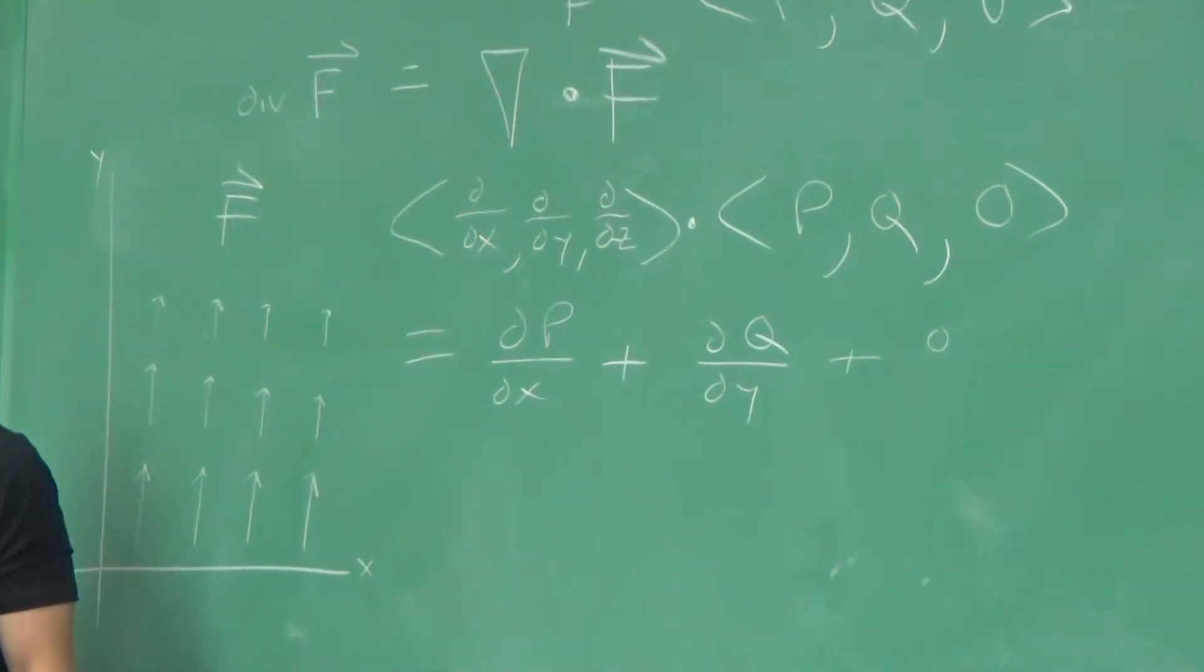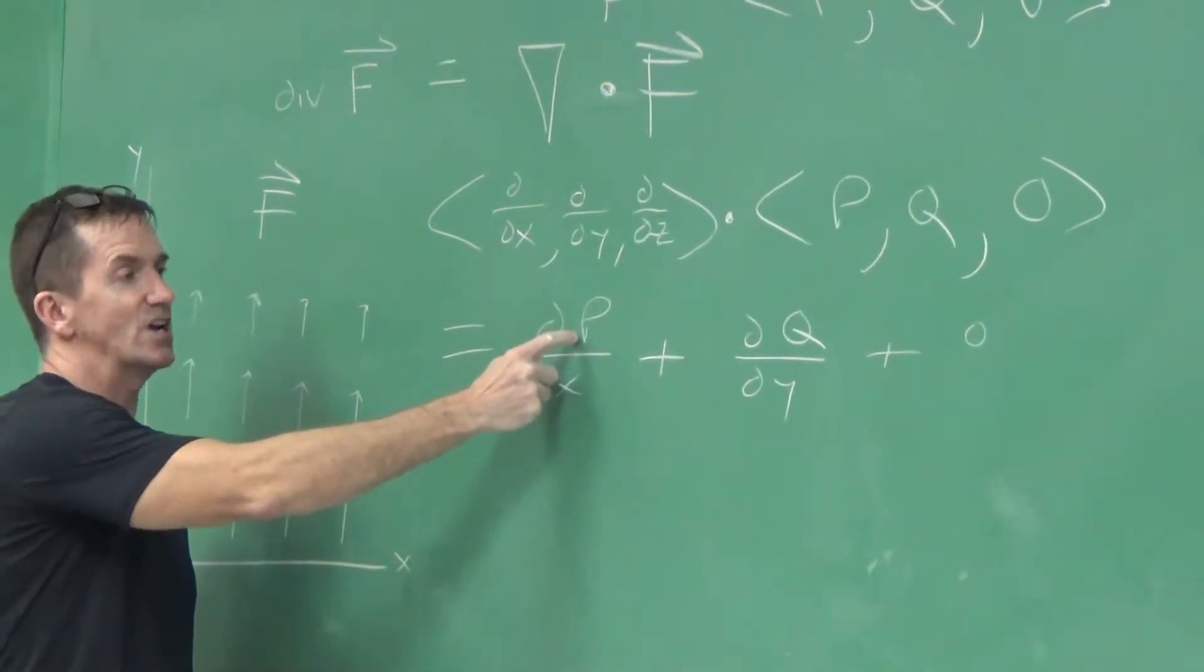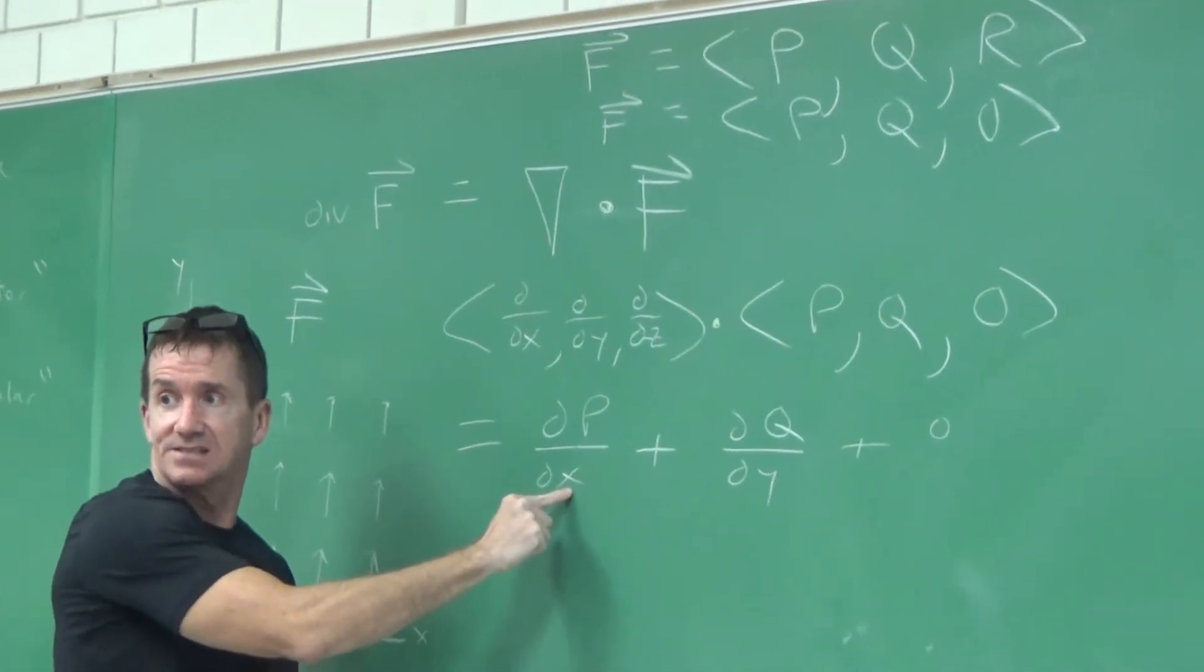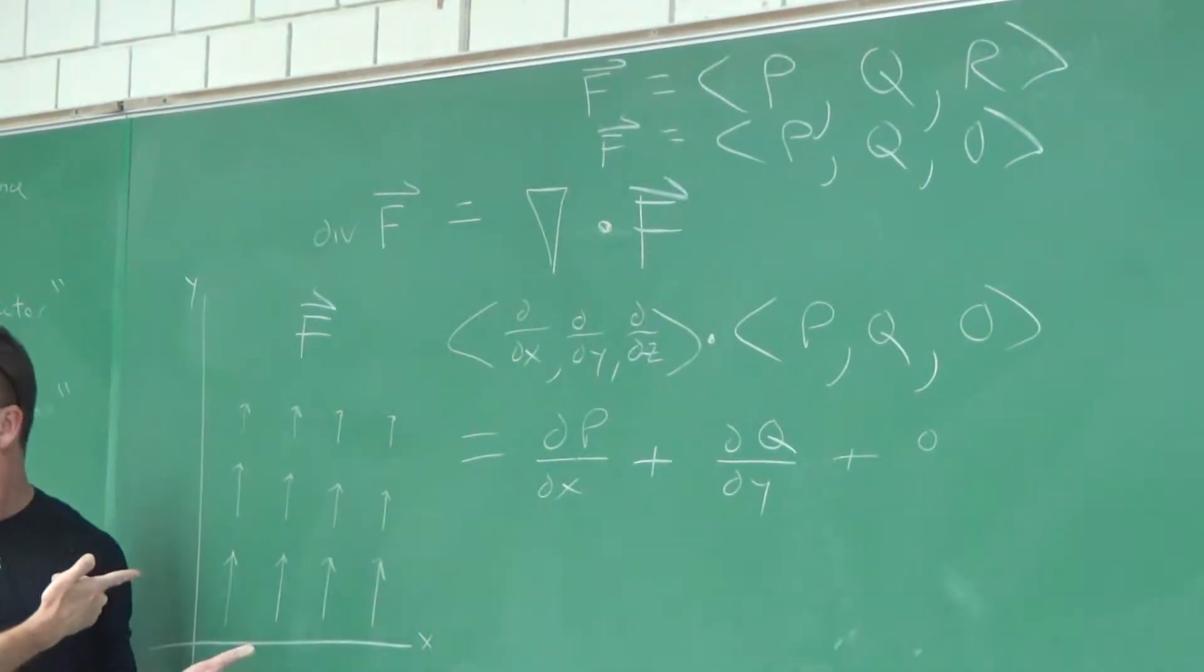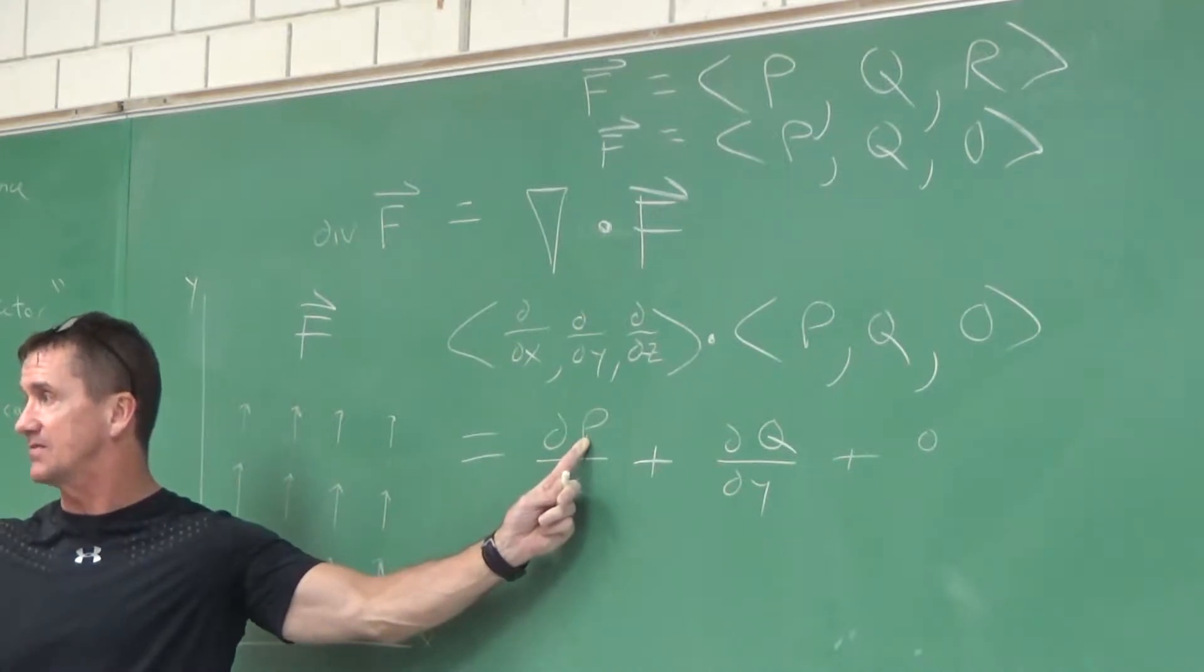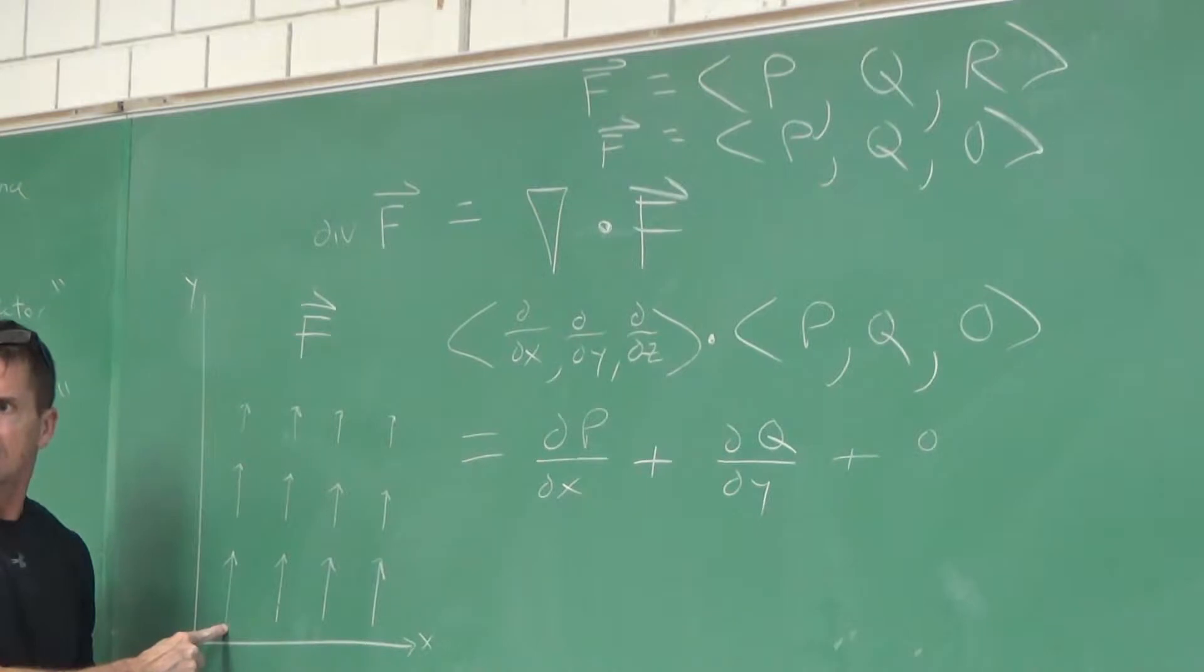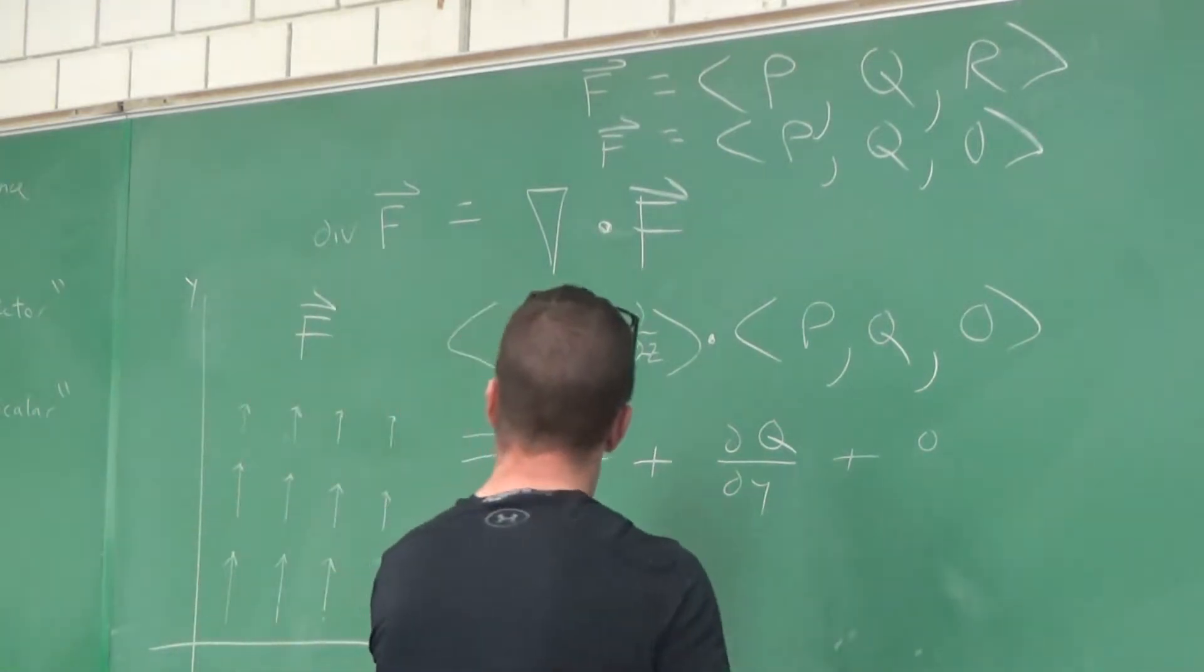This is rate of change of x component of vector in the direction of the positive x-axis. Let me say that again so you know how to read this graph. Rate of change of the x component of the vector in the direction of the positive x-axis. What's the x component vector here? Zero. Andrew, great. Outstanding.